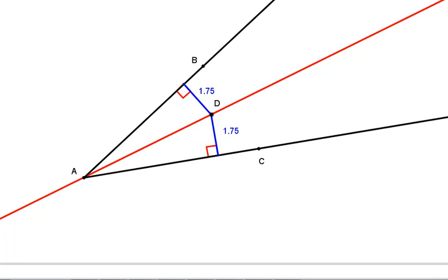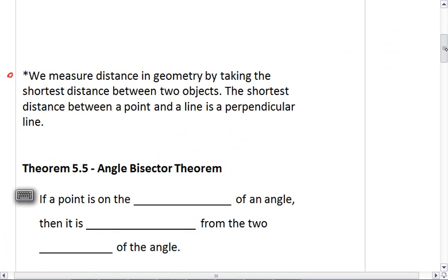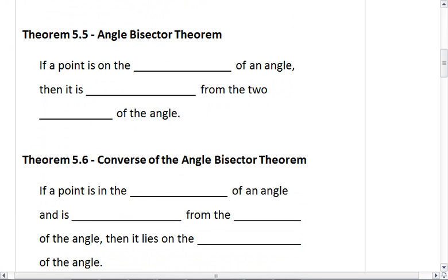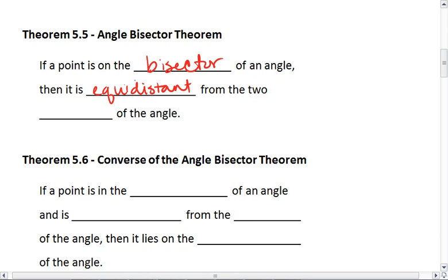And this brings us to Theorem 5.5, the angle bisector theorem, which tells us that if a point is on the bisector of an angle, then it is equidistant, E-Q-U-I-D-I-S-T-A-N-T, meaning equal distance from the two sides of the angle.